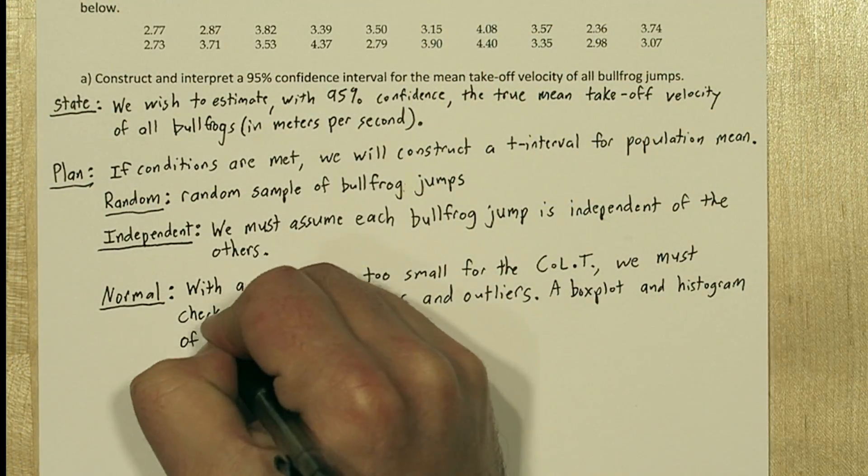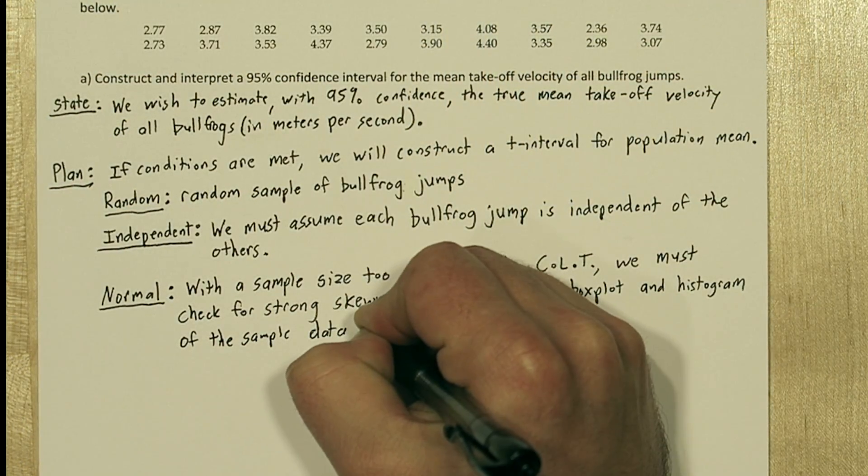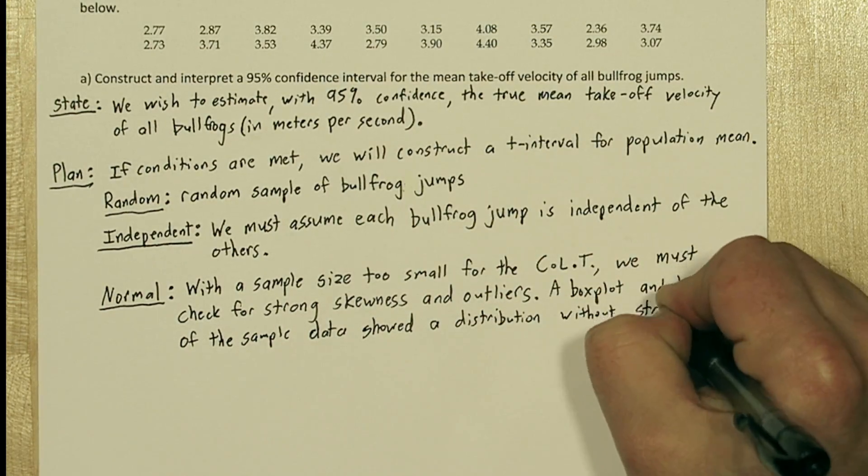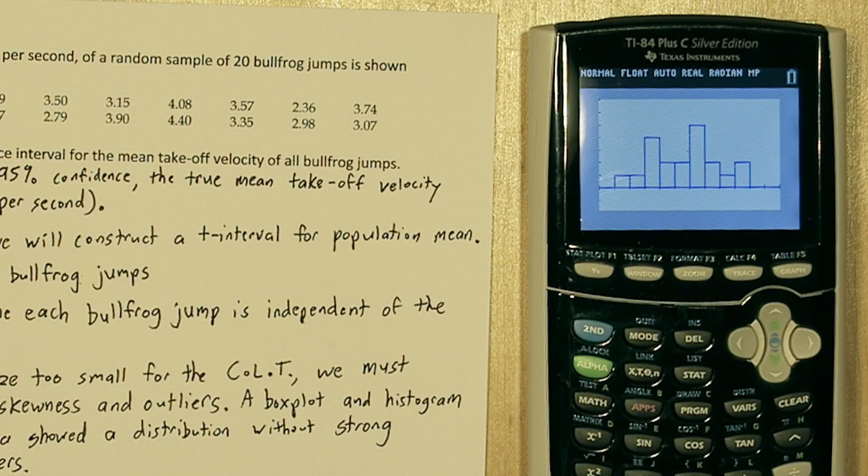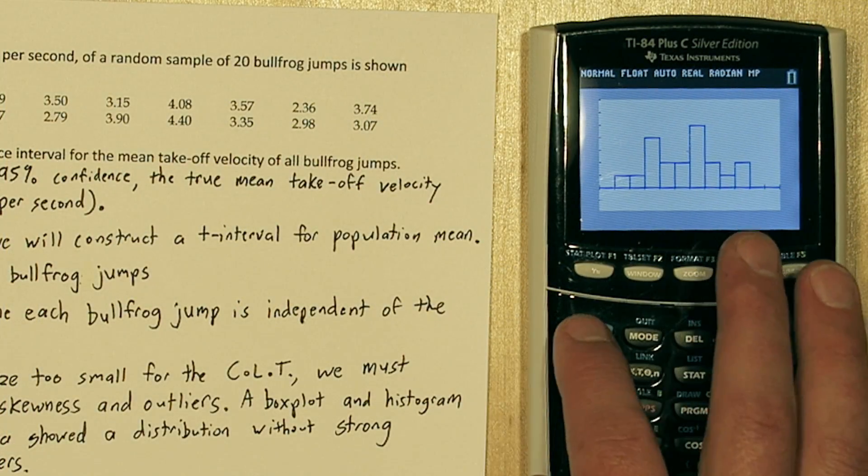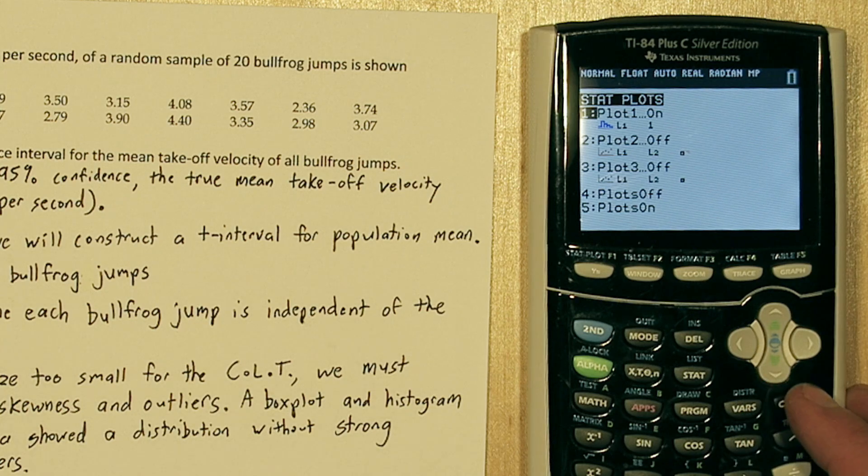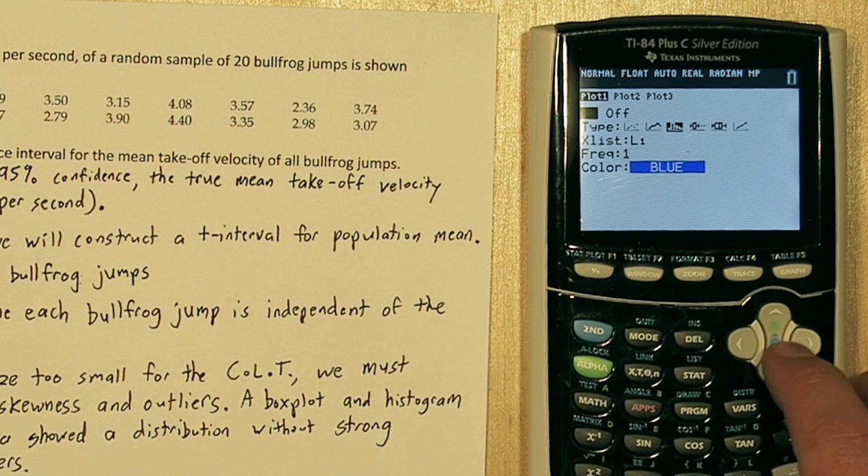So we can write a box plot and histogram of the sample data showed a distribution without strong skewness or outliers. There's one more way to check if the data is approximately normally distributed. If you press 2nd and y equals again, go to plot 1, and go to the last option.